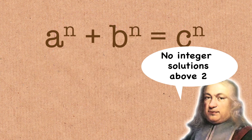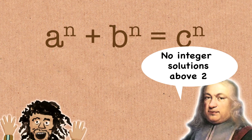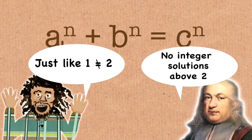Fermat's Last Theorem is true, and it has to be just as obvious as the fact that one doesn't equal two. In this case, Fermat's Last Theorem reduces down to something called modularity - the modularity theorem. So it's not 'one doesn't equal two' here - it's something else.